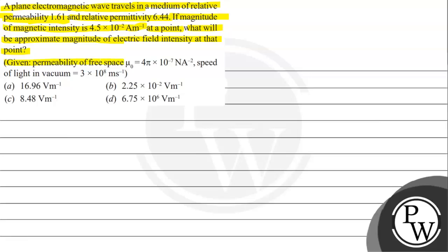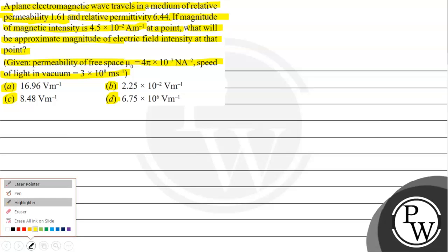Given permeability of free space μ₀ as 4π × 10⁻⁷ newton per ampere square, speed of light in vacuum is 3 × 10⁸ meter per second. Option A: 16.96 V/m. Option B: 2.25 × 10⁻² V/m. Option C: 8.48 V/m. Option D: 6.75 × 10⁶ V/m.